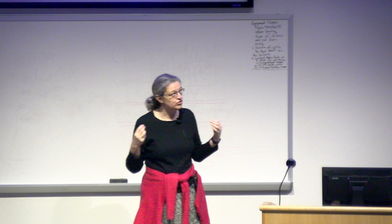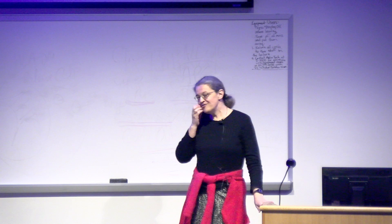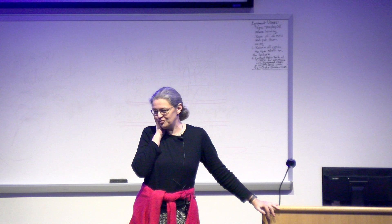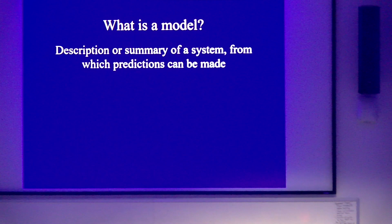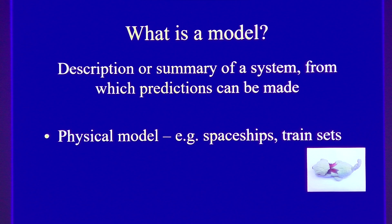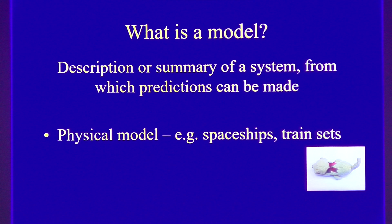I will confess I was probably near the end of my PhD before I really understood what a model was. Here's the definition I like: a model is a description or summary of a system from which you can make some sort of prediction. We use models for things like developing spaceships — you'd never send a ship into space without testing it in a wind tunnel first. You want to test it out, have prototypes. It's never as big or perfect as the main one, but you're always using them.